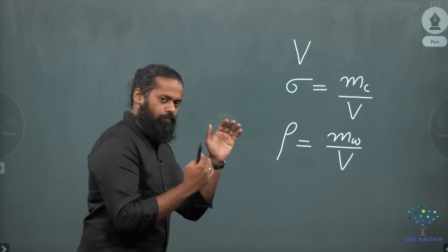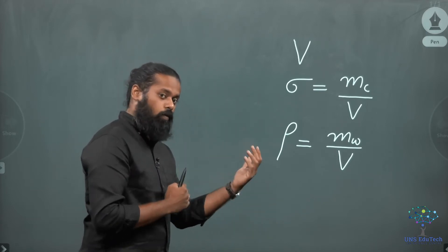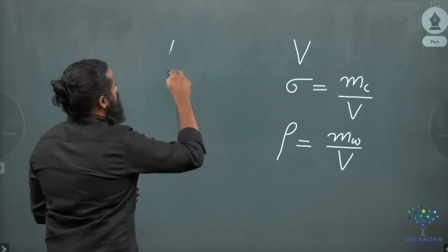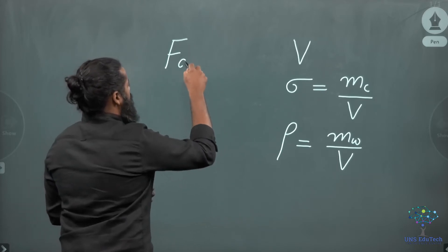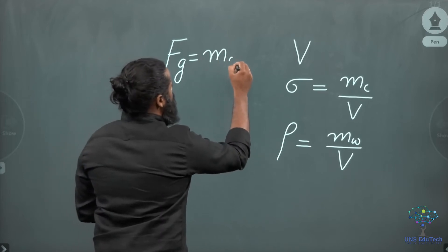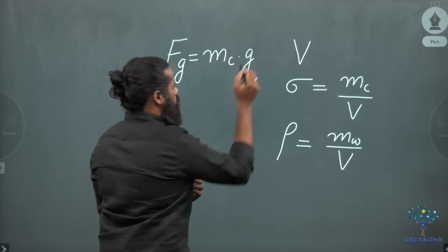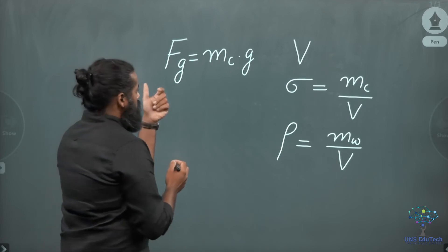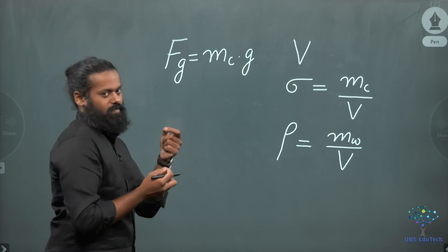Now we can find out, if you are considering the weight before dipping into water, that weight is nothing but the gravity acting on that body. That will be equal to mass of the cork into G. So here, this much will be the tension on that string.